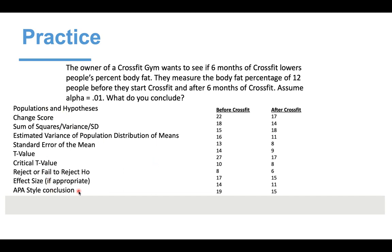Here are our steps for conducting this dependent t-test. We're going to define our populations and hypotheses, calculate a change score, use that change score to calculate sum of squares, variance, standard deviation, then calculate standard error, t-value, critical t-value, make a decision about rejecting or failing to reject the null, and if we're significant we'll calculate an effect size and write up our APA-style conclusion.